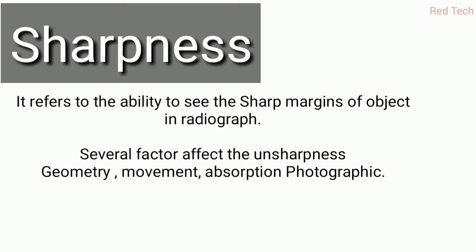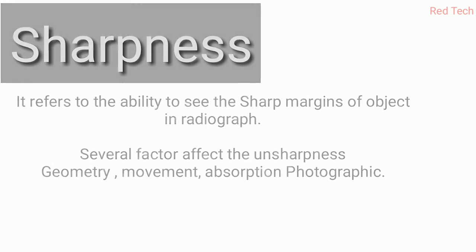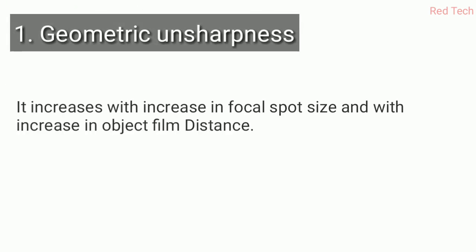Sharpness refers to the sharp margin of an object in a radiograph — how clear the edges and outlines appear. Several factors affect unsharpness: geometric, movement, absorption, and photographic. I will discuss each one.